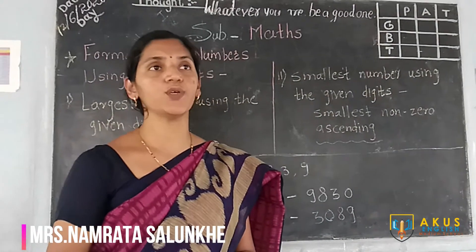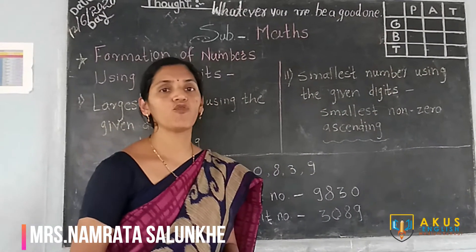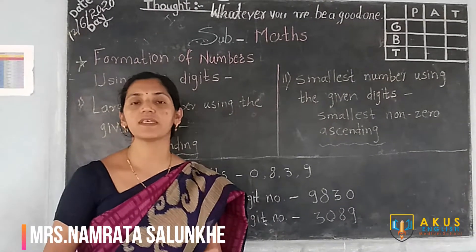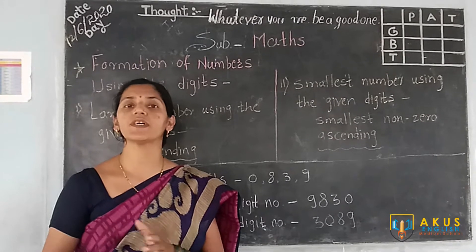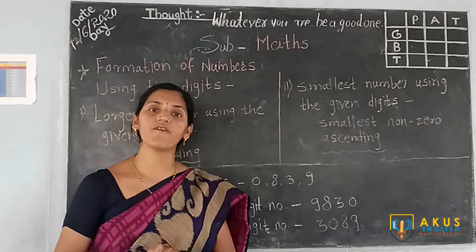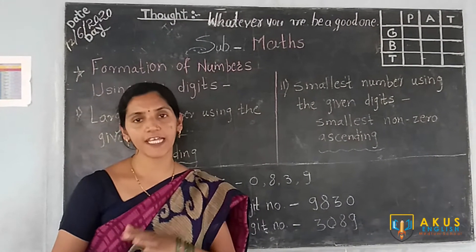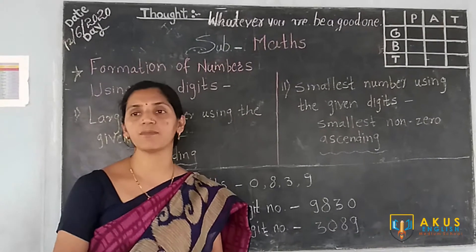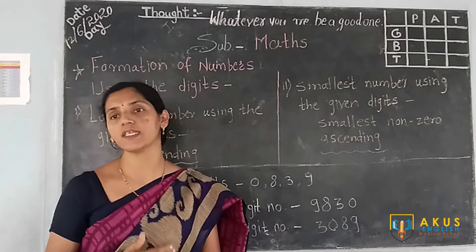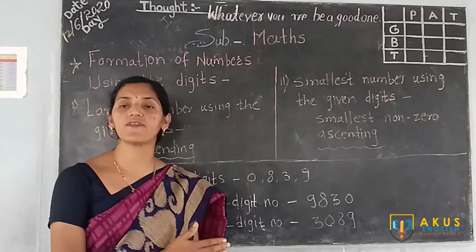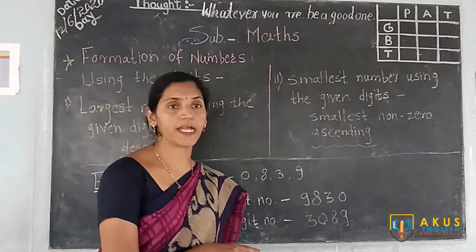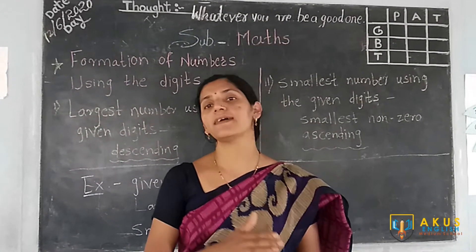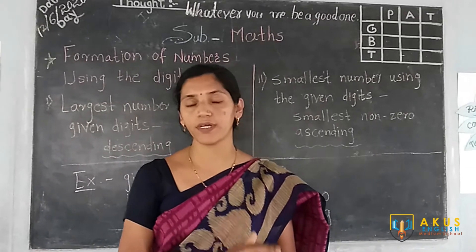In our last video we have seen, for numbers, how to compare given numbers — whether they consist of the same digits or different digits — which one is greater and which one is smaller. In addition to that, we have also seen how to arrange the numbers in ascending order and in descending order.